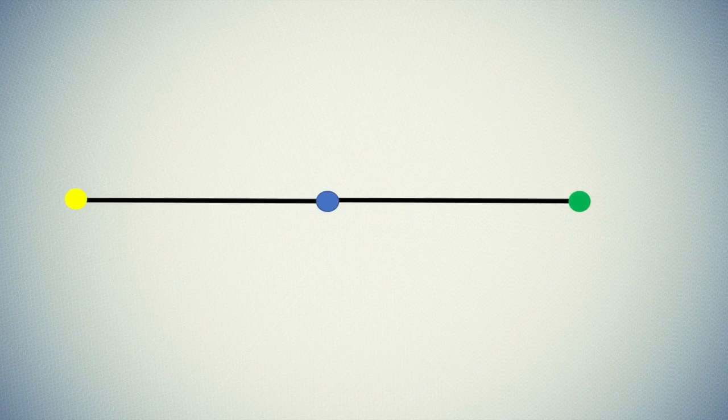Still not convinced? If we remove the dots and stack the lines one above the other, they're exactly the same length. This is called the Müller-Lyer illusion, and what it shows is that brains are weird. What people see and what they believe they see may be entirely different.